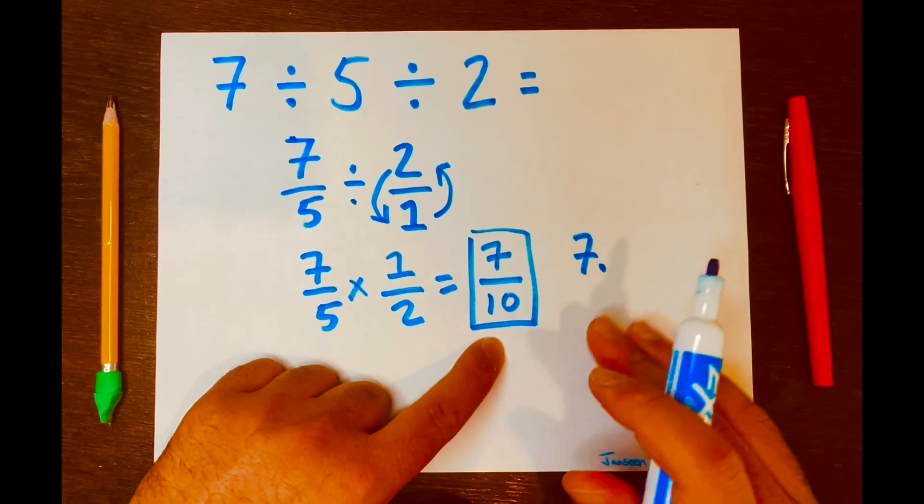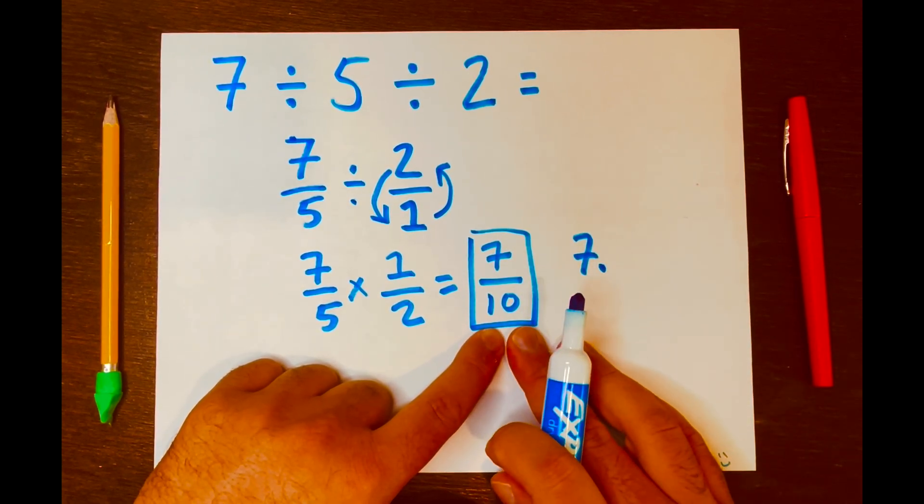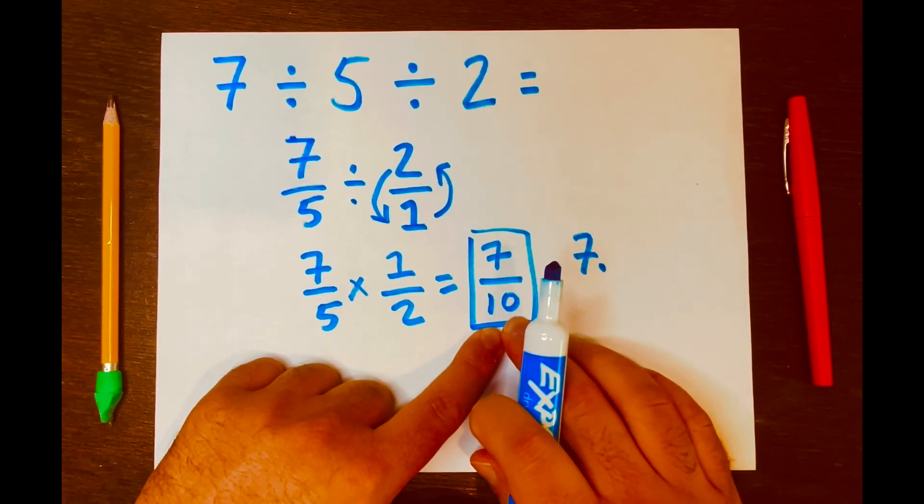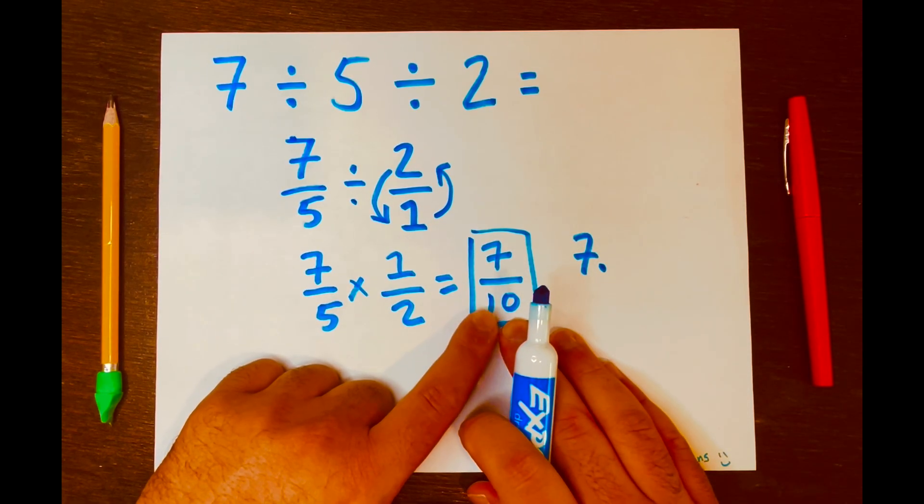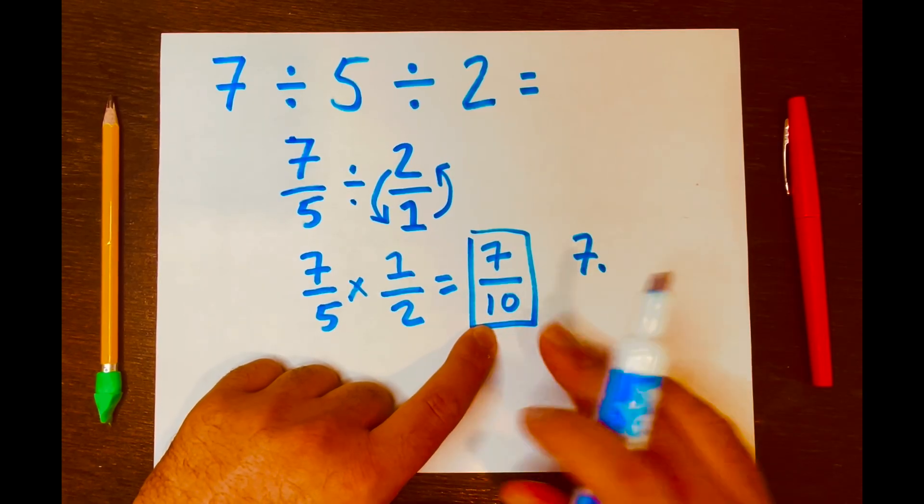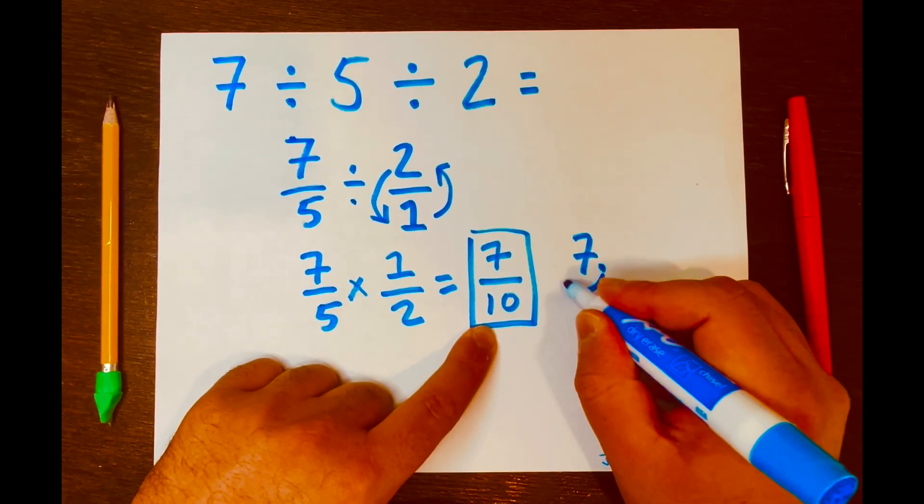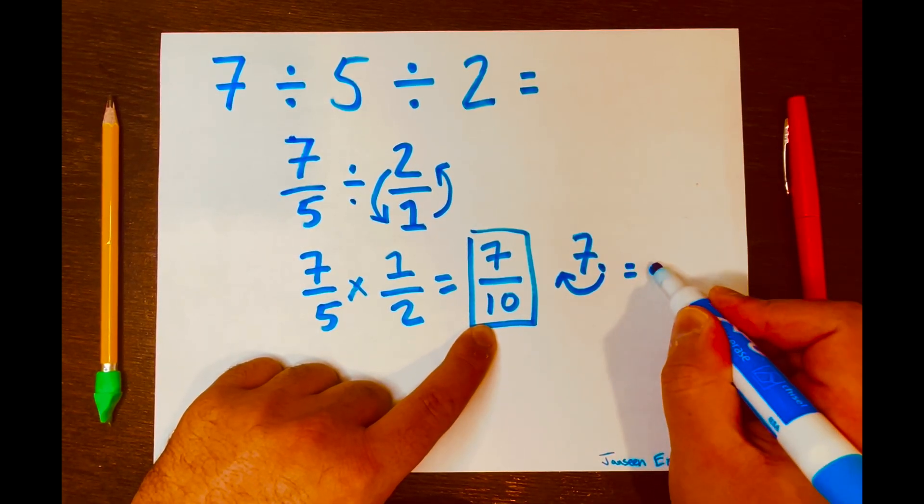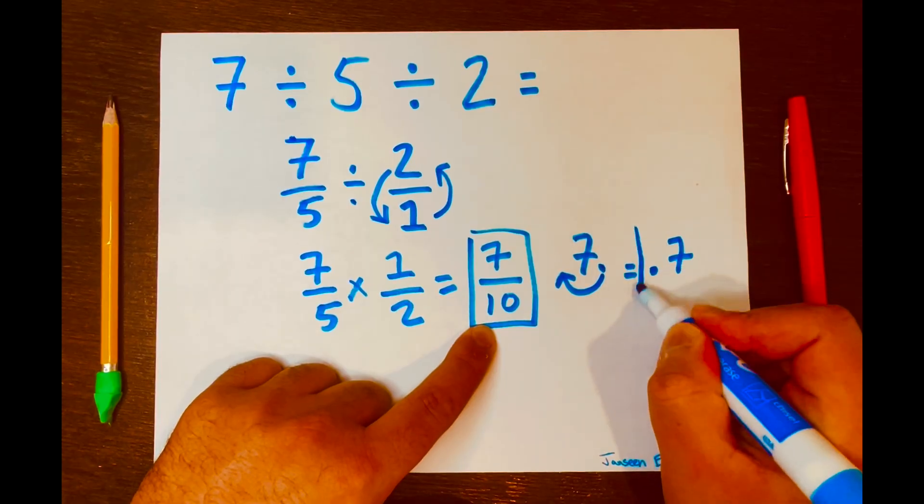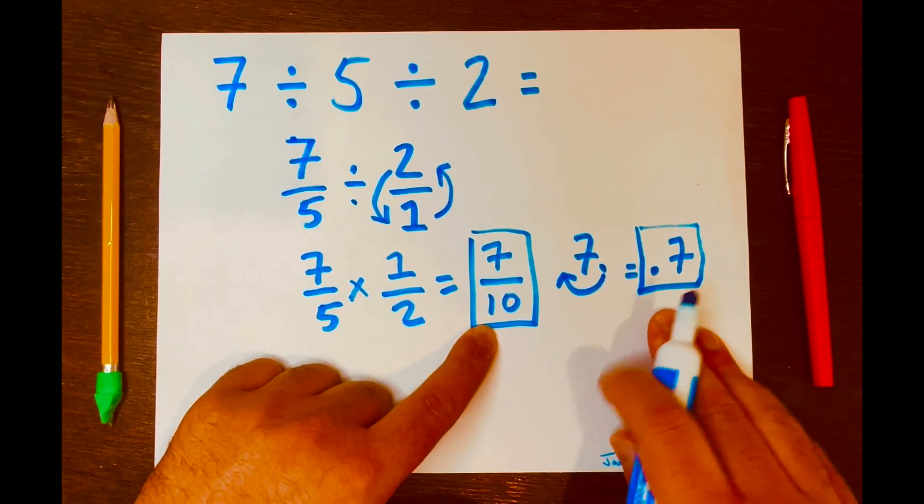And just move the decimal to the left by the number of zeros that you have in the denominator. We have 1 zero in the 10. So you just move one place to the left like that. And now your answer becomes 0.7. So that will be your decimal answer.